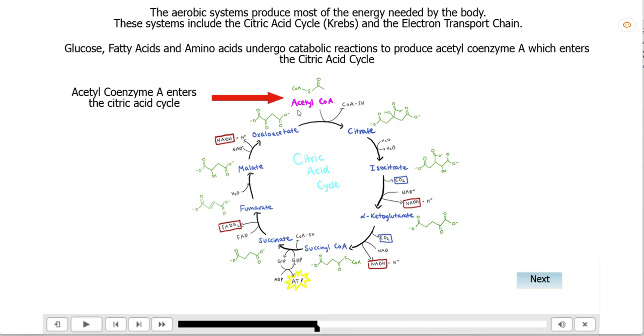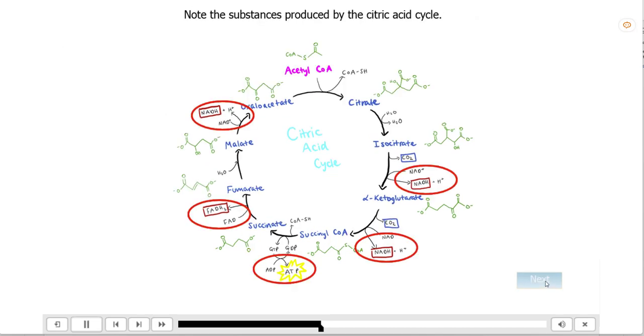If the question asks you how many molecules of NADH are produced from one molecule of acetyl coenzyme A, this goes around once, the answer is three. If it asks you how many molecules of NADH are produced by one molecule of glucose, this goes around twice. So it's six NADHs. All right, let's go to the next part.